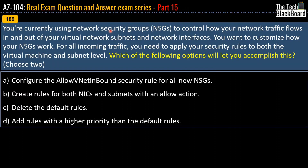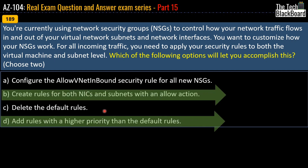Question 189: You are using Network Security Groups (NSGs) to control how network traffic flows in and out of your virtual network subnets and network interfaces. You want to customize how your NSG works, applying security rules to both virtual machine and subnet level for all incoming traffic. Which two options will let you accomplish this? Options: configure the AllowVnetInbound security rule for all new NSGs, create rules for both NIC and subnets with an allowed action, delete the default rules, or add rules with a higher priority than the default rules. The correct answers are option B and option D.